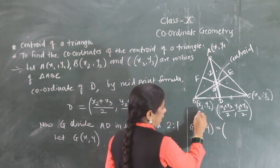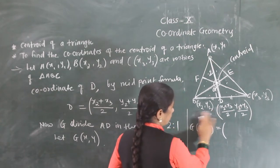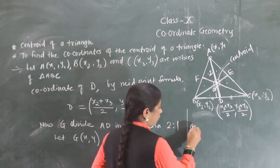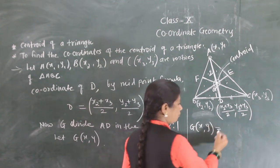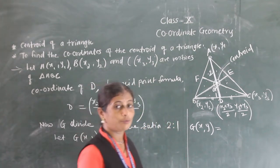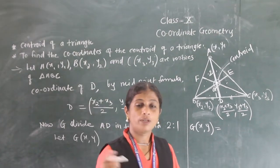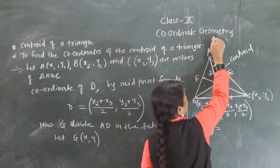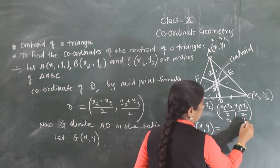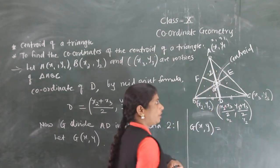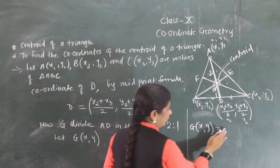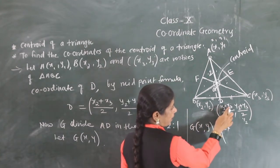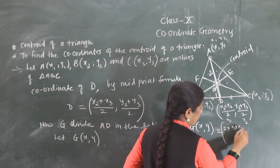Here x1, y1 corresponds to point A and x2, y2 corresponds to point D. We have to find the coordinates of G. So: M·x2 — where M is 2, multiplied by x2 which is (x2 + x3)/2 — plus N·x1, where N is 1, multiplied by x1. The denominator M + N is 2 + 1. Similarly for y: 2 multiplied by y2 which is (y2 + y3)/2, plus 1 multiplied by y1, upon 2 + 1. The 2s cancel.